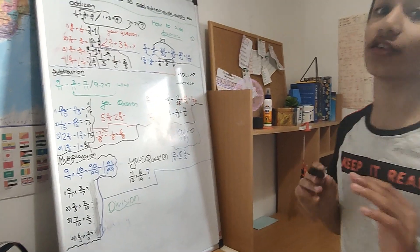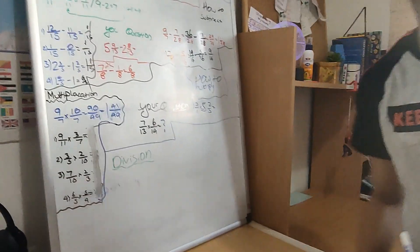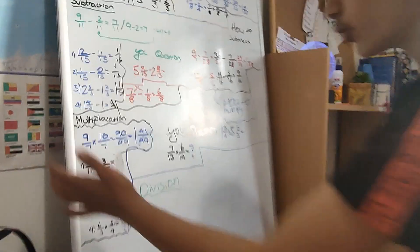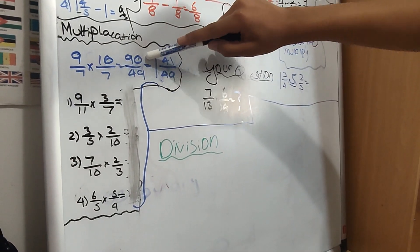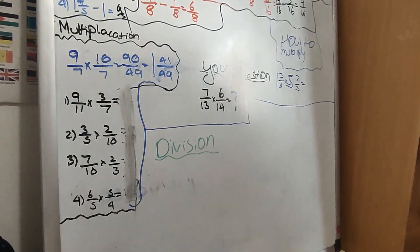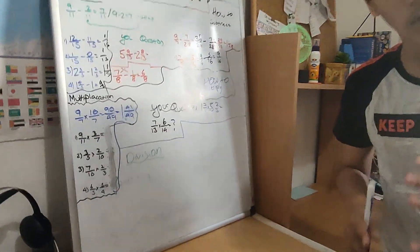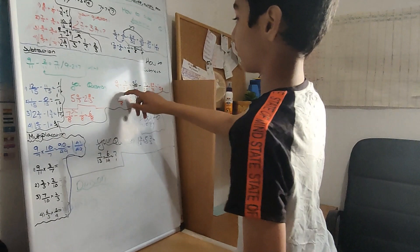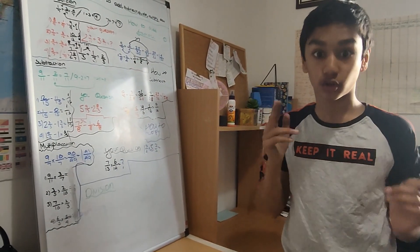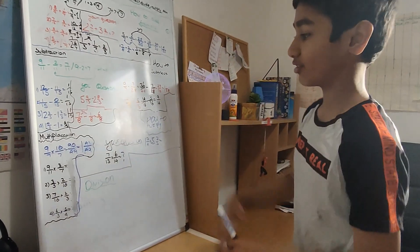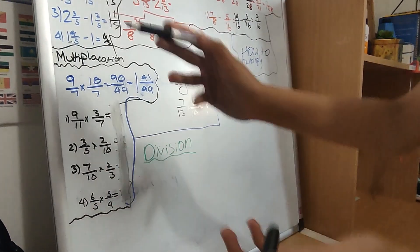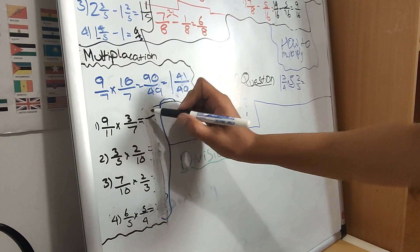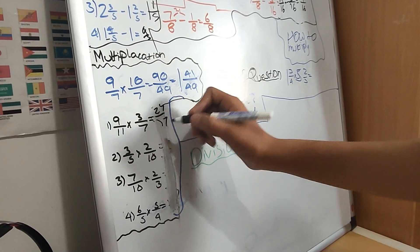Now we're going on to probably the easiest thing to do in fractions, which is multiplying. You really need a good sense of multiplication knowledge for this. It's really simple — you just times the numerators together. So 9 times 10 is 90, and 7 times 7 is 49. This is an exception where you actually times both denominators together — you don't need to find common denominators at all. So 9/11 times 3/7: you do 9 times 3 is 27, and 11 times 7 is 77.